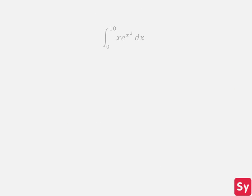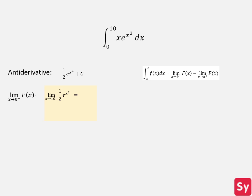Next example, we have the integral from 0 to 10 of x times e to the x squared. We compute the indefinite integral first and get one half times e to the x squared plus c. We then refer to the formula on solving definite integrals. Next, we find the limit of the antiderivative as x approaches 10 from the left. We plug 10 into the antiderivative and simplify, getting one half e to the hundredth.